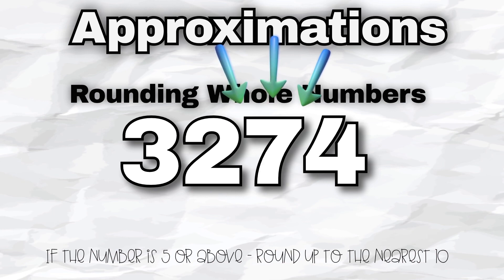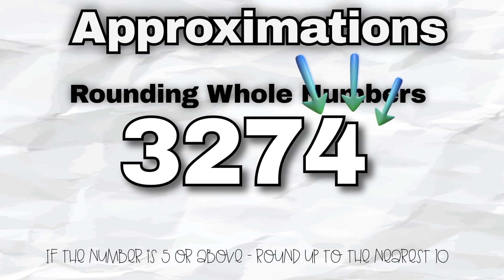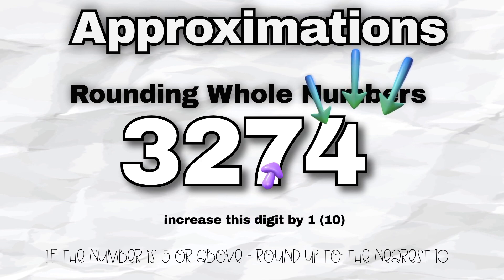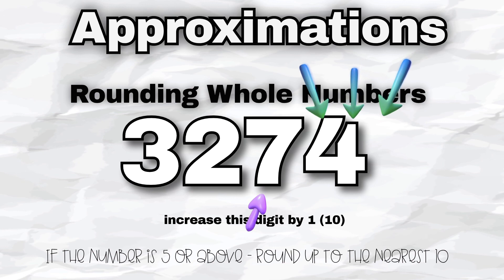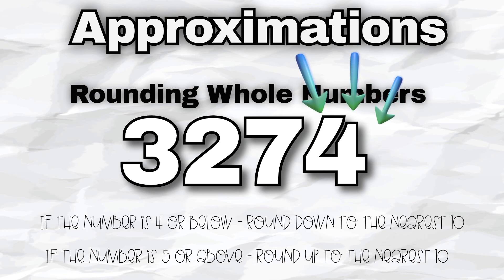Step two: take a look at the digit right after this last digit. If it's five or more, then round up by increasing the last digit by one. However, if it's four or less, then round down by leaving the last digit as it is.